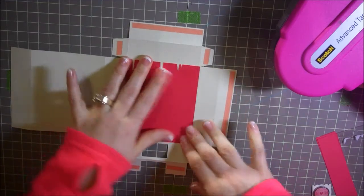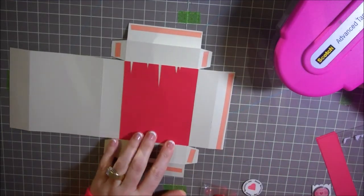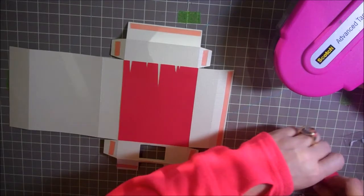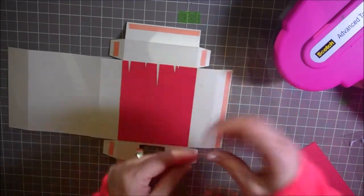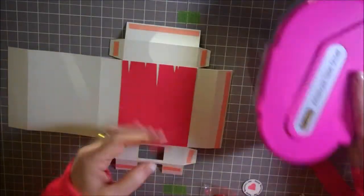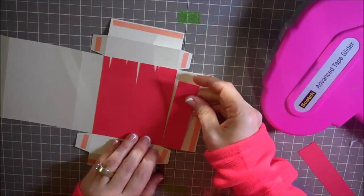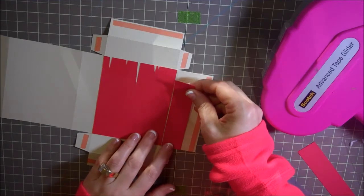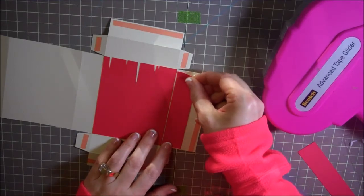Then we need to add the part that goes on the side. That's these little red portions here. I'm just going to do this again. Add some more tape to it. Get that down here. That looks great.